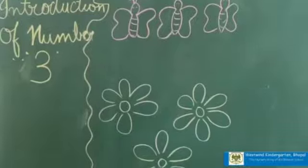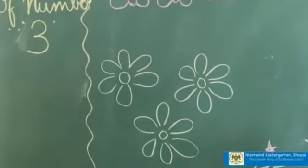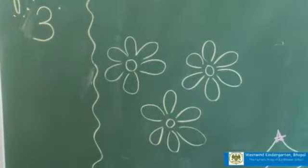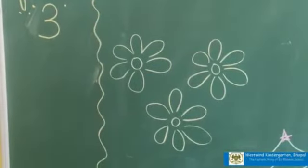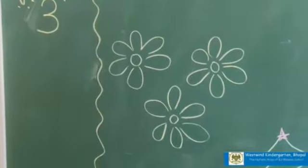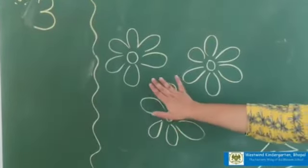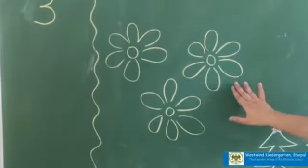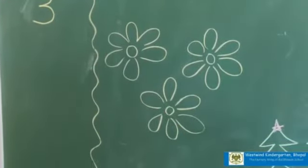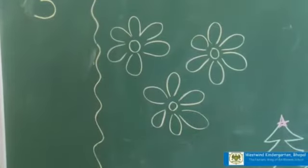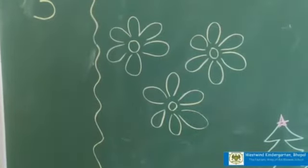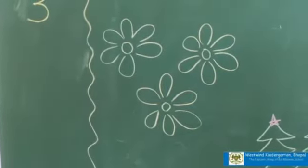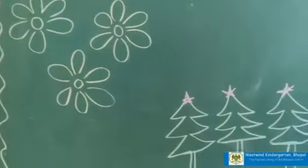What is this? These are some flowers. Now let's count the flowers: one, two, three.